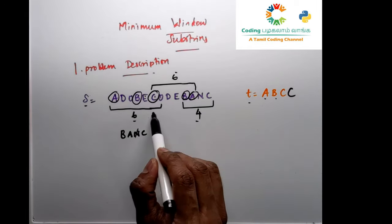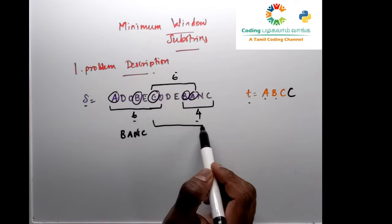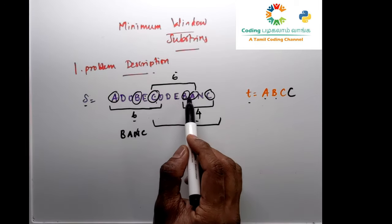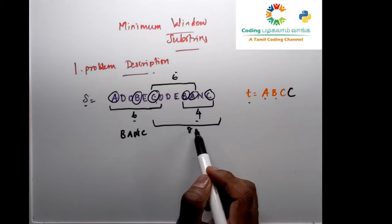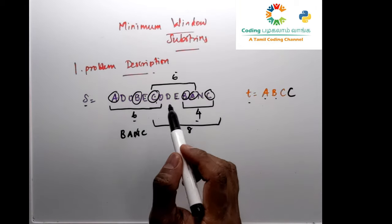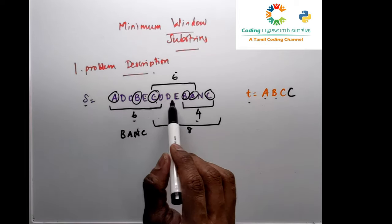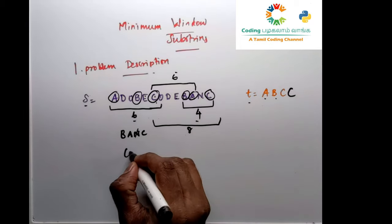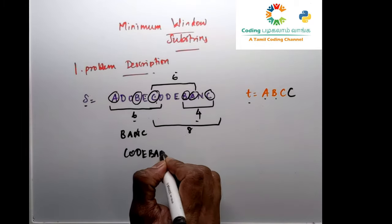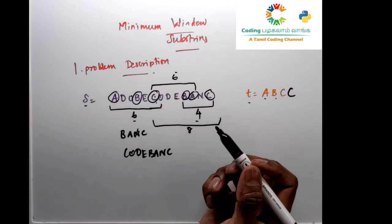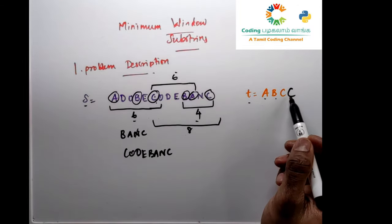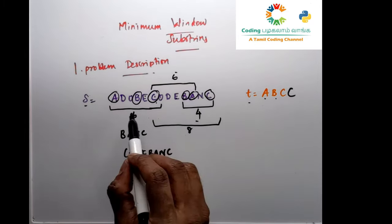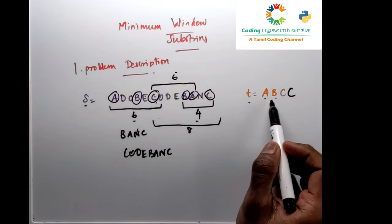In that case, we count up to 8 characters. Obviously this might be the only possible window — otherwise you'd have to include the whole string. For example, with C, O, D, B, A, N, C — this would be the minimum length substring. This is the whole concept: find the minimum length substring of S that has all the characters in T, including duplicate characters.